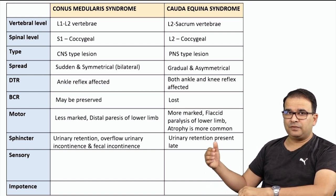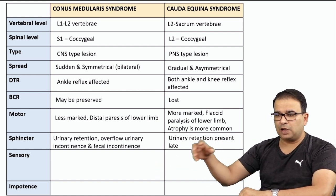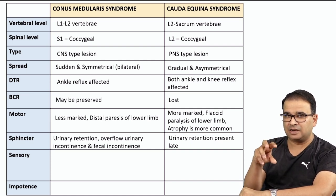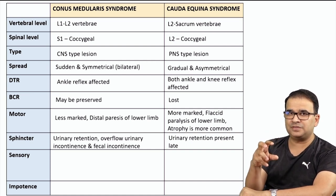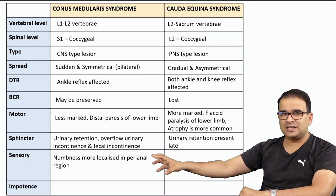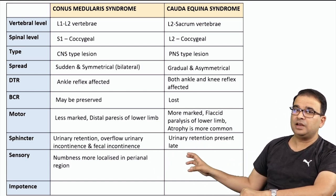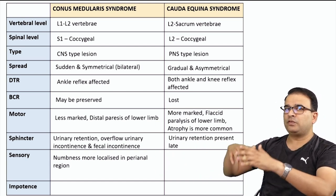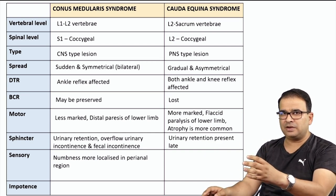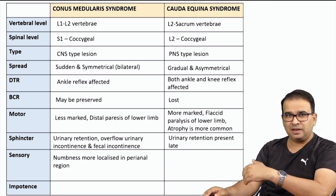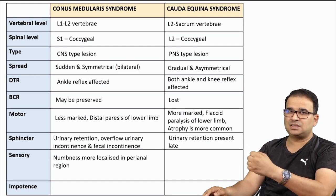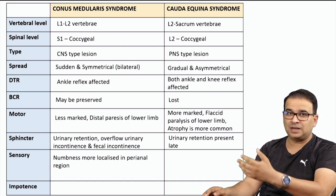Regarding sensory deficit: in conus medullaris syndrome, there is more localized sensory loss in the perianal region, supplied by the lower sacral nerves S4 and S5 — numbness localized to the perianal region. In cauda equina syndrome, it is more of a saddle type of anesthesia involving the perianal region and the medial aspect of the thigh, and because of lumbar nerve involvement, the sensory loss may extend to the pubic region as well.